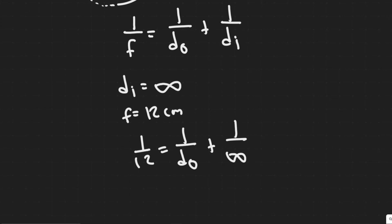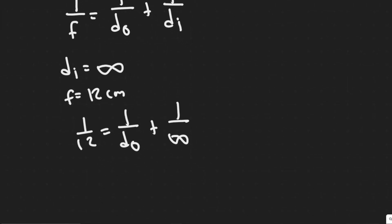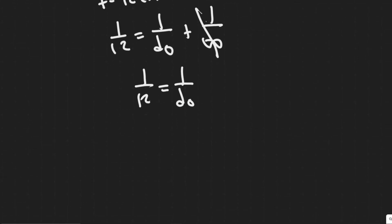You can think about this as a limit. 1 over infinity goes to 0, so we can just treat this value as 0. This tells us 1 over 12 equals 1 over d₀. It should be apparent that d₀, your object distance, is just equal to 12.